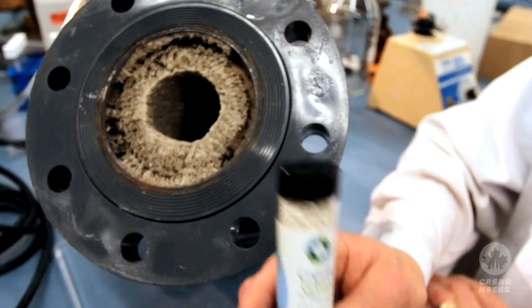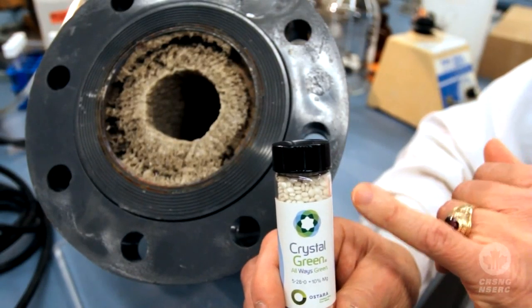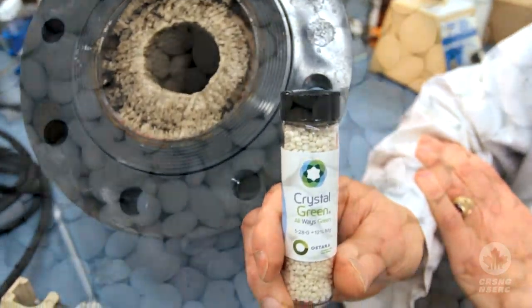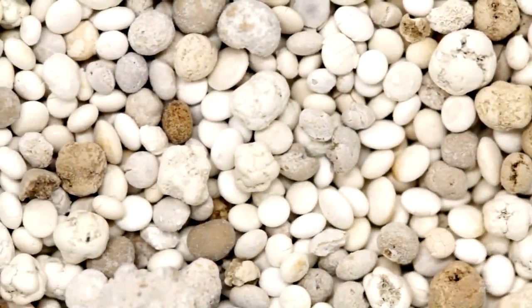It's got magnesium, ammonium, phosphate, but it's not in the form that we can use. The technology we develop brings it into this form, which are the pellets. This is now very valuable as a commercial fertilizer and it's called Crystal Green.